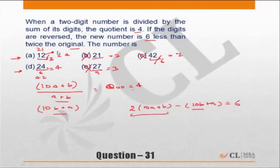Double of 12 is 24, the gap is 3, while we need the gap to be 6. Incorrect. 24 into 2 is 48. The new number is 6 less than twice the original. 48 minus 42 is 6. Correct. Answer choice D.